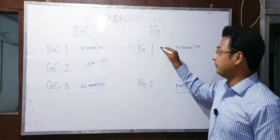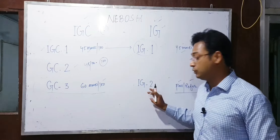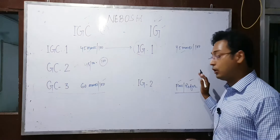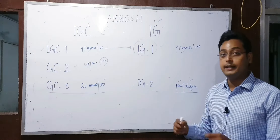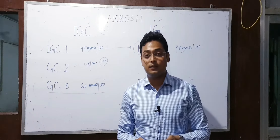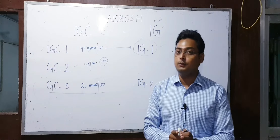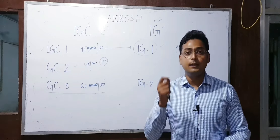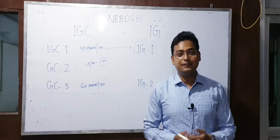Ab naye course ke baare mein baat kar lete hain. NEBOSH IG mein do papers hain. Pehla paper management — IG1 — jo 100 marks ka paper hai; pass hone ke liye aapko 45 marks lane hote hain. Doosra paper IG2 jo ki workplace assessment hai, jisko risk profiling ya risk assessment ke naam se jaante hain. Yeh report aapko banana hai. Maine already videos banaye hue hain ki how to make an effective risk assessment aur IG2 ka risk assessment kaise banate hain — please us video section mein jakar zaroor check out kijiyega. Thank you very much. Subscribe the channel, hit the bell icon. Stay safe, take care, bye-bye.